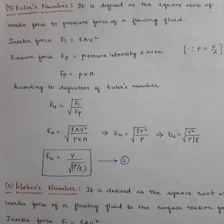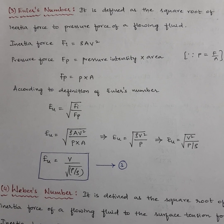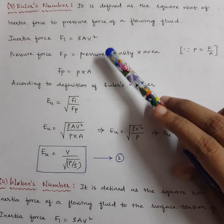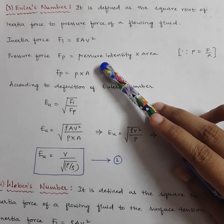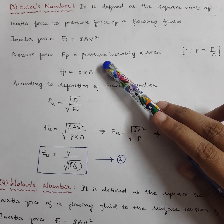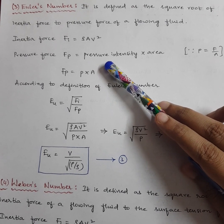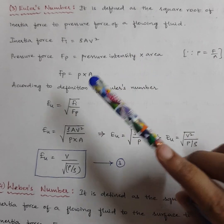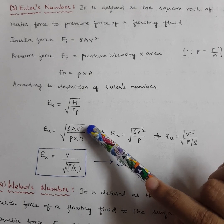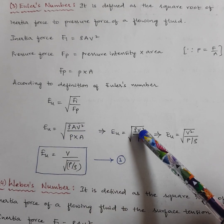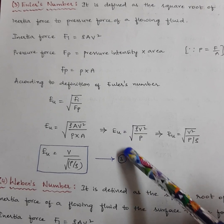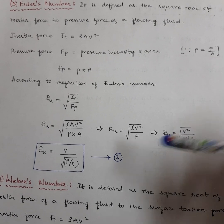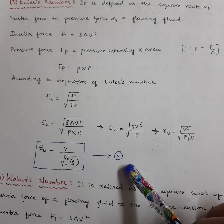Next is Euler's number. Euler's number is the square root of inertia force to pressure force of a flowing fluid. Inertia force is ρAV² as usual. Pressure force FP = pressure × area = P × A. So Euler's number = √(ρAV²/PA). Cancelling A, we get √(ρV²/P). Rearranging, Euler's number = V/√(P/ρ).